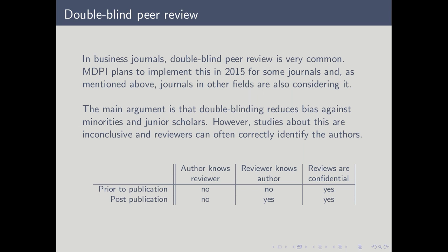At the other end of things, journals in business and some economics journals operate double-blind peer review, and it's quite curious that Nature Chemistry, which is not from this background, is starting to offer this as an option. In this case, reviewers don't know the identity of the authors, and of course the authors don't know the identity of the reviewers either. The argument for this is that it will reduce bias against minorities and junior scholars. However, studies have generally been fairly small and not particularly conclusive, and there are also studies showing that in up to 50% of cases reviewers can correctly identify the authors anyway. Many authors like this system, and we're planning to introduce it during 2015 for some MDPI journals.